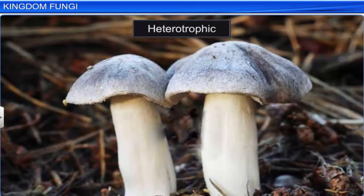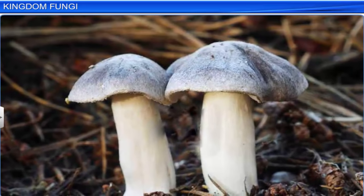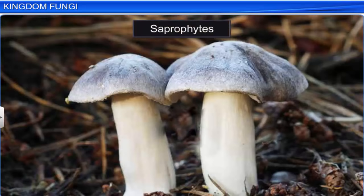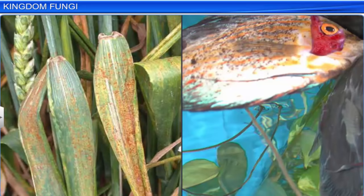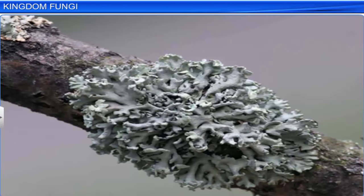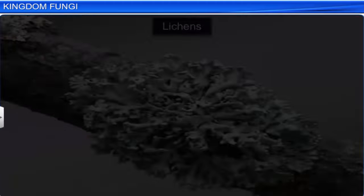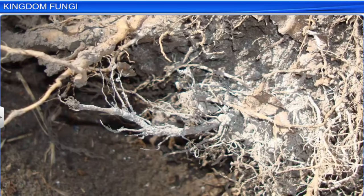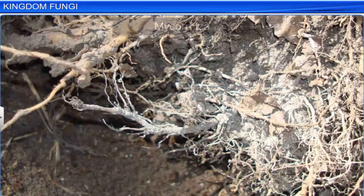Fungi are heterotrophic. Fungi that absorb organic matter from dead substrates are called saprophytes. Fungi which depend on living plants and animals are parasites. Some fungi are associated with other organisms in mutually beneficial relationships. For example, fungi associate with algae to form lichens. Other fungi associate with the roots of plants as mycorrhiza.